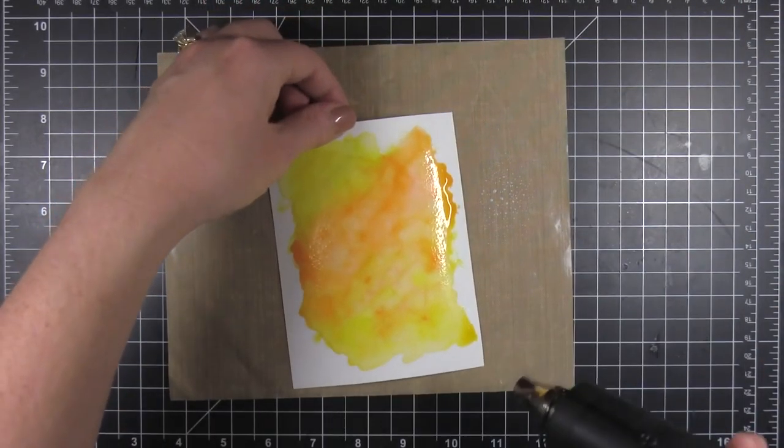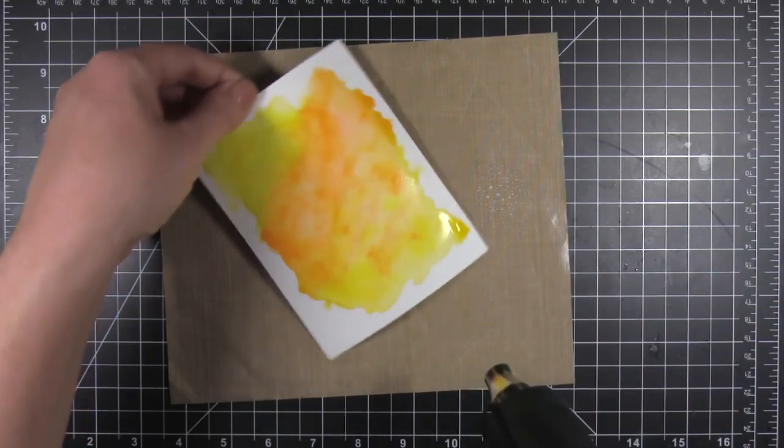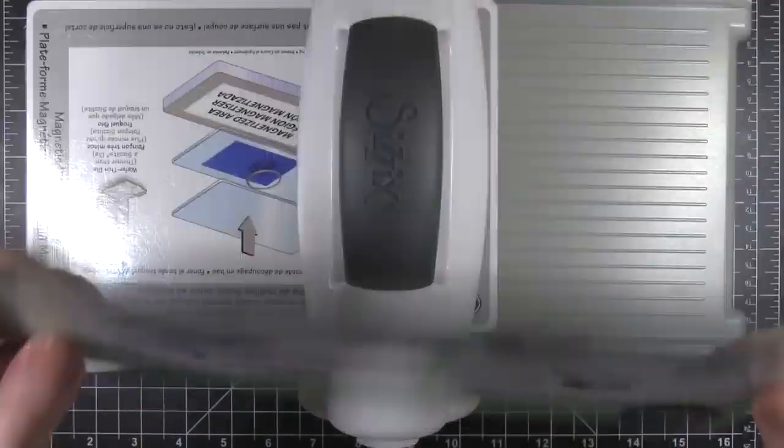So if you add it to the wet cardstock, it's fine. Just make sure you scribble it off to get the paper, the color going again.